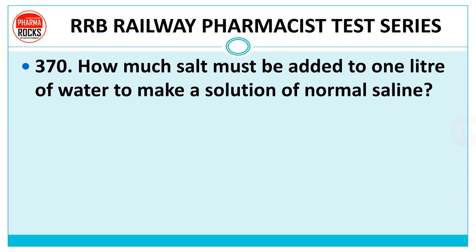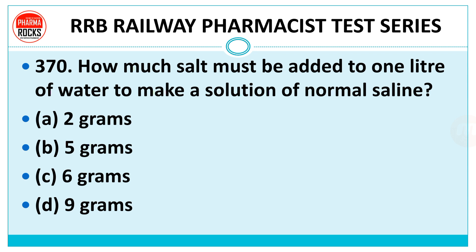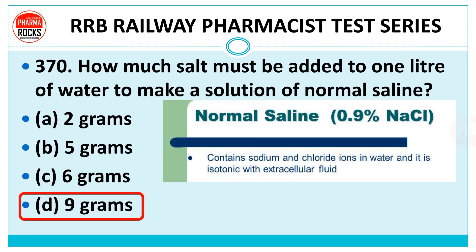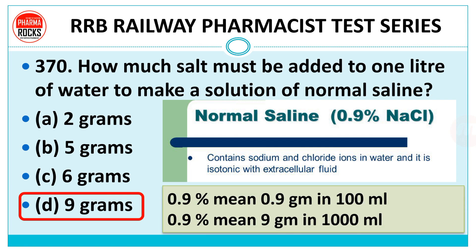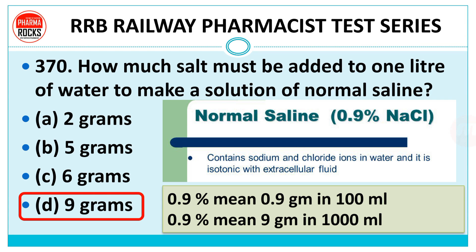Question 370: How much salt must be added to 1 liter of water to make normal saline? Options: 2 g, 5 g, 6 g, or 9 g. Right answer is D, 9 gram. Normal saline is 0.9% NaCl, meaning 0.9 gram in 100 ml. For 1000 ml, multiply both sides by 10: 0.9 × 10 = 9 gram in 1000 ml. So add 9 grams of salt to 1 liter of water.